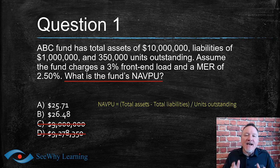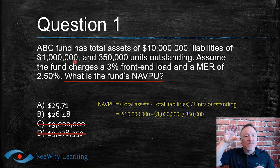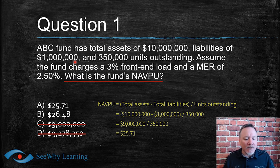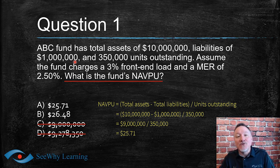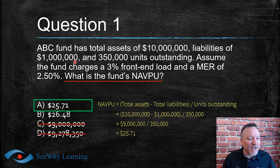Fund assets are $10 million, subtract liabilities of $1 million — the top of our formula is $9 million. Divide by the 350,000 units outstanding, and we get $25.71 per unit. Using my HP 10B2+ calculator — the same one we recommend at CY Learning — I can confirm the answer is $25.71. The correct answer is A.